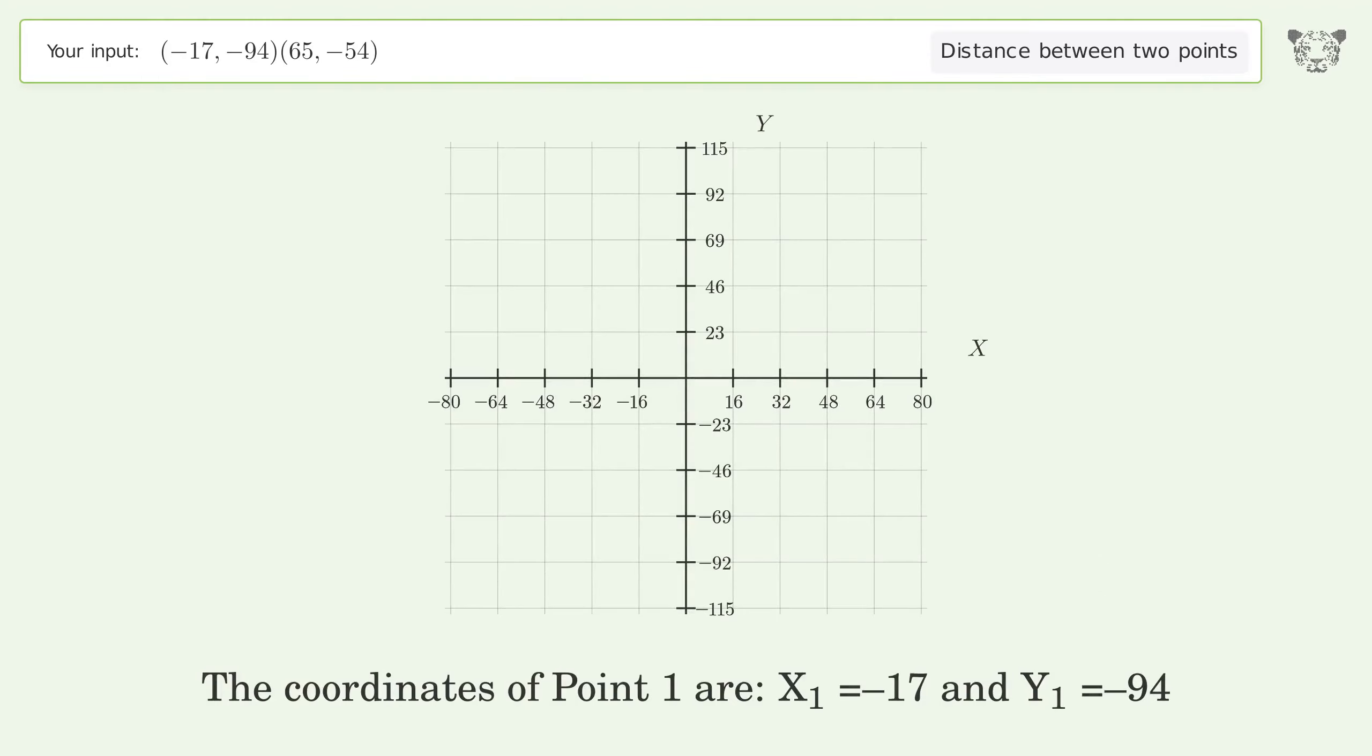The coordinates of point 1 are x1 equals negative 17 and y1 equals negative 94. The coordinates of point 2 are x2 equals 65 and y2 equals negative 54.